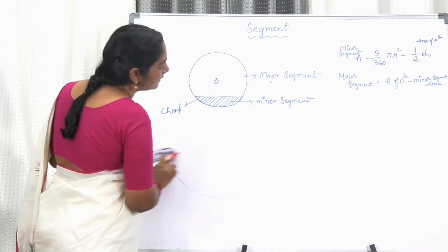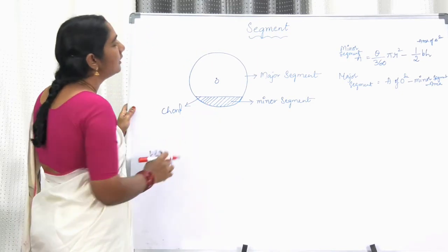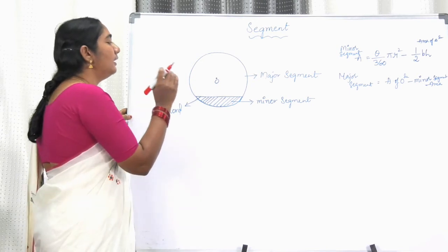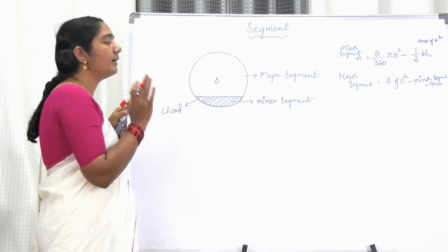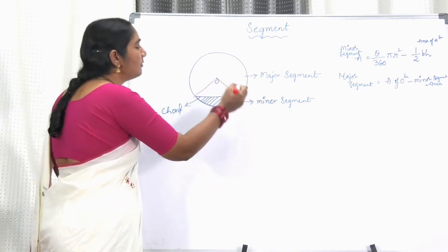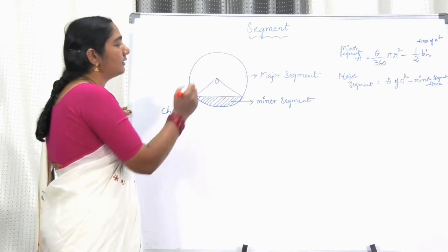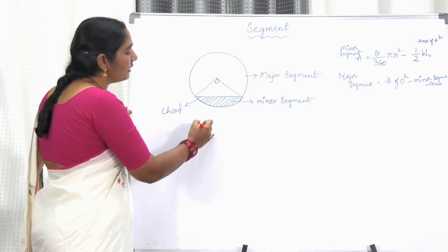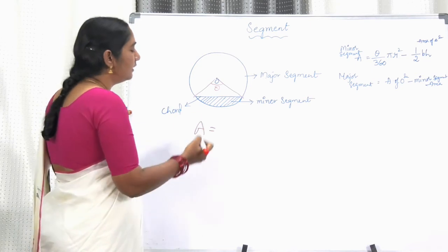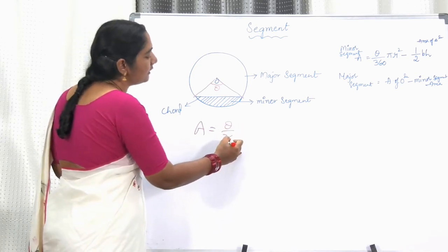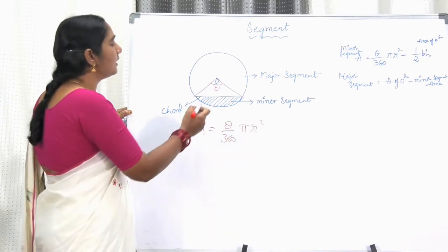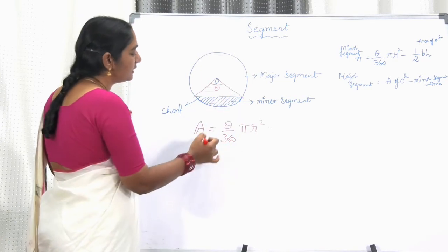Now let us consider how to find out the area of a minor segment. Before taking the segment, let us first take the sector. We already have the formula for the area of a sector: if theta is the angle at the centre, then the area of the sector is theta divided by 360 into pi R squared. This is the area of a sector.